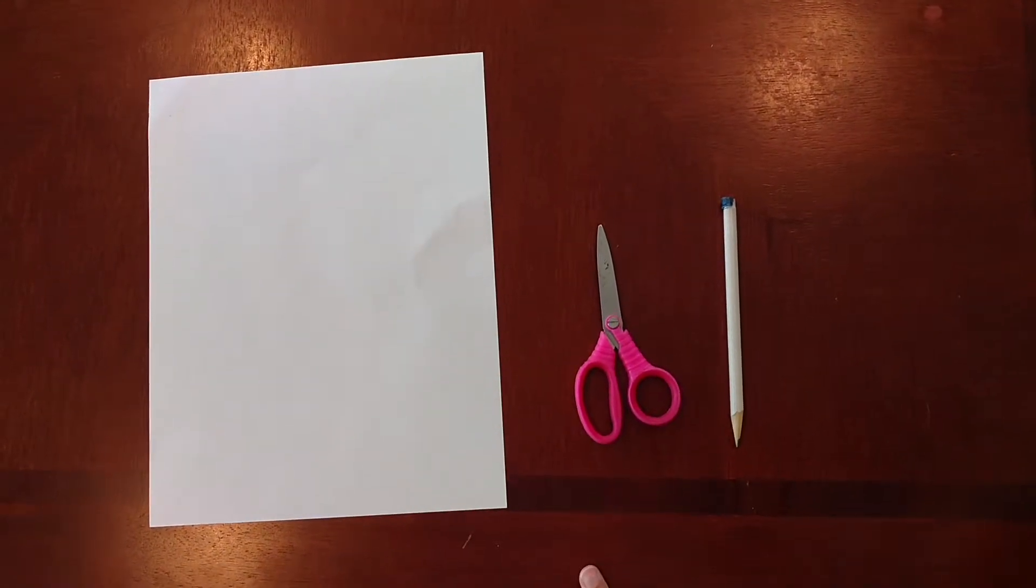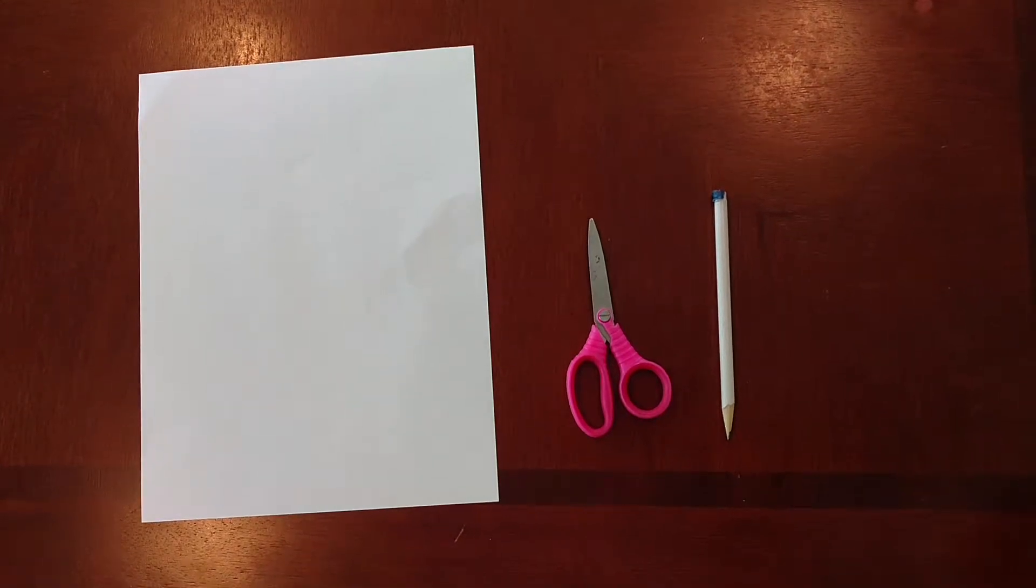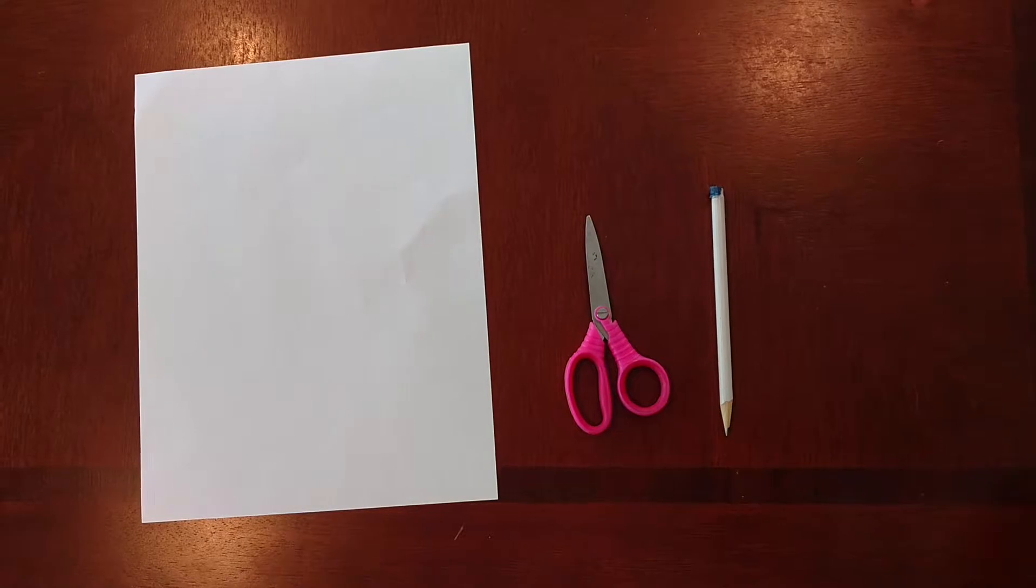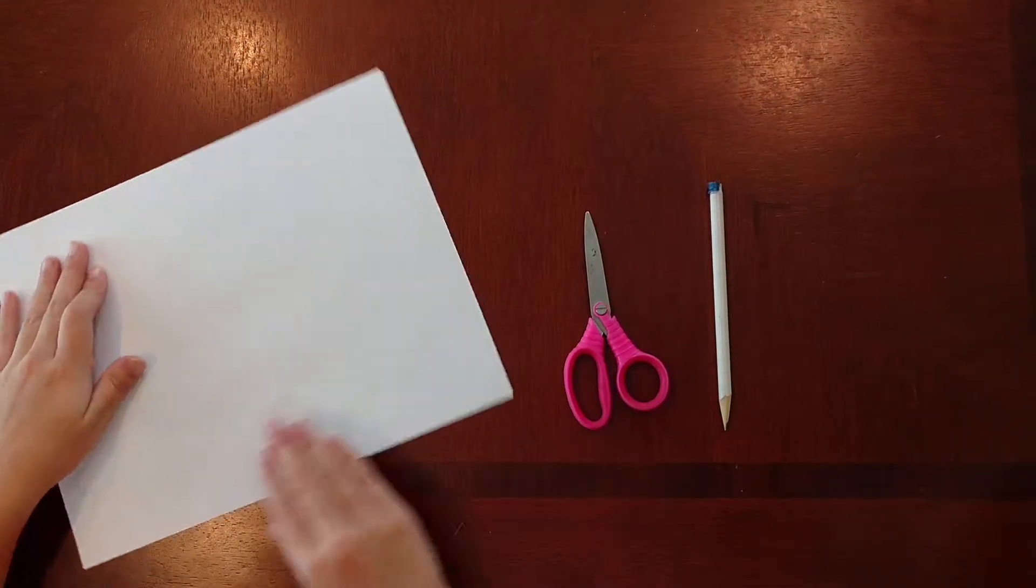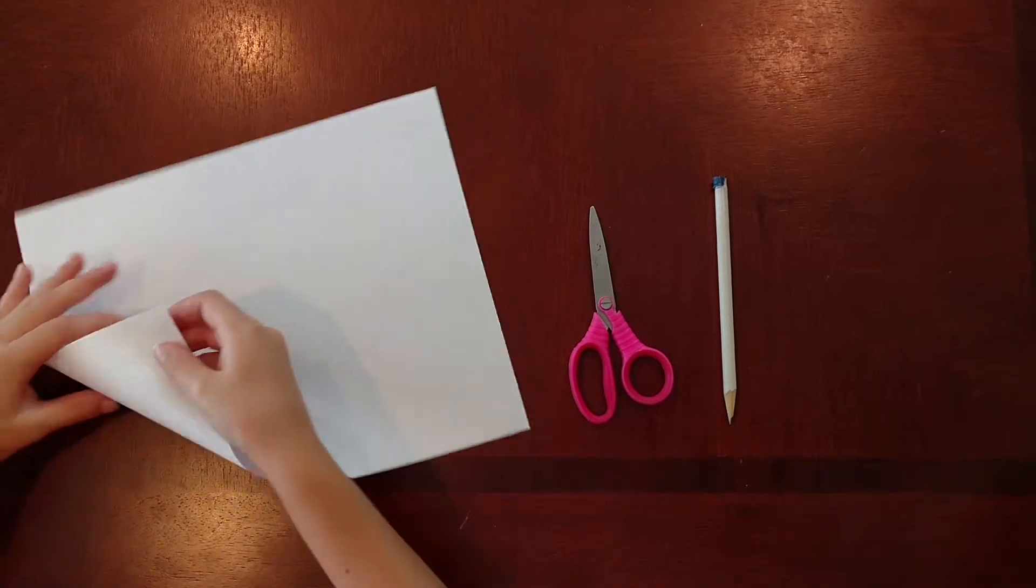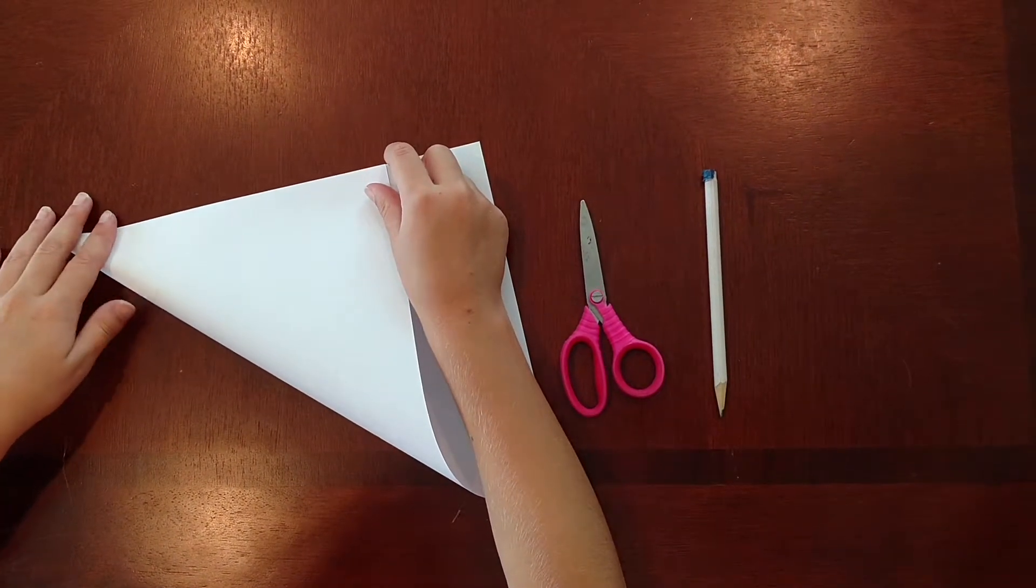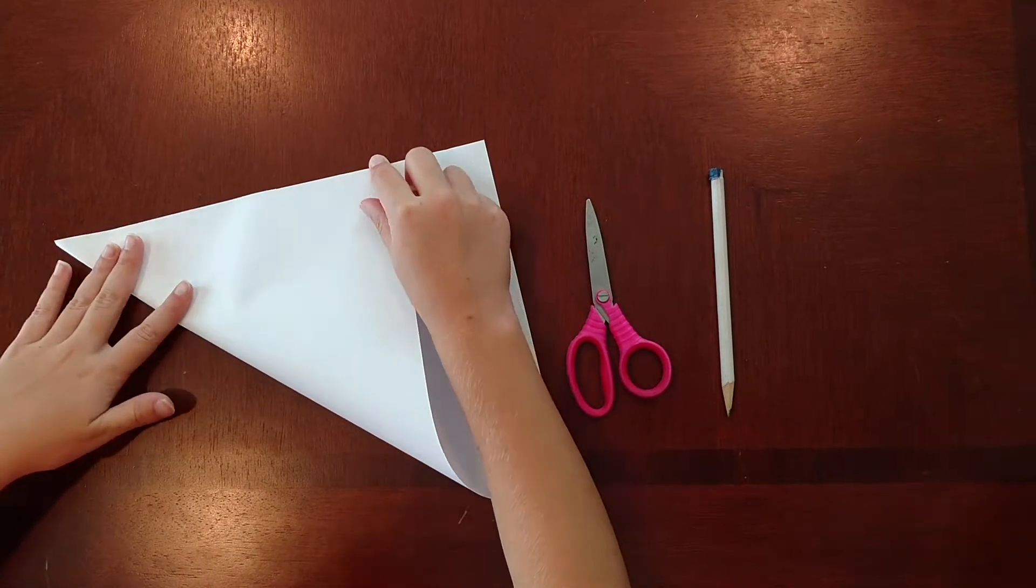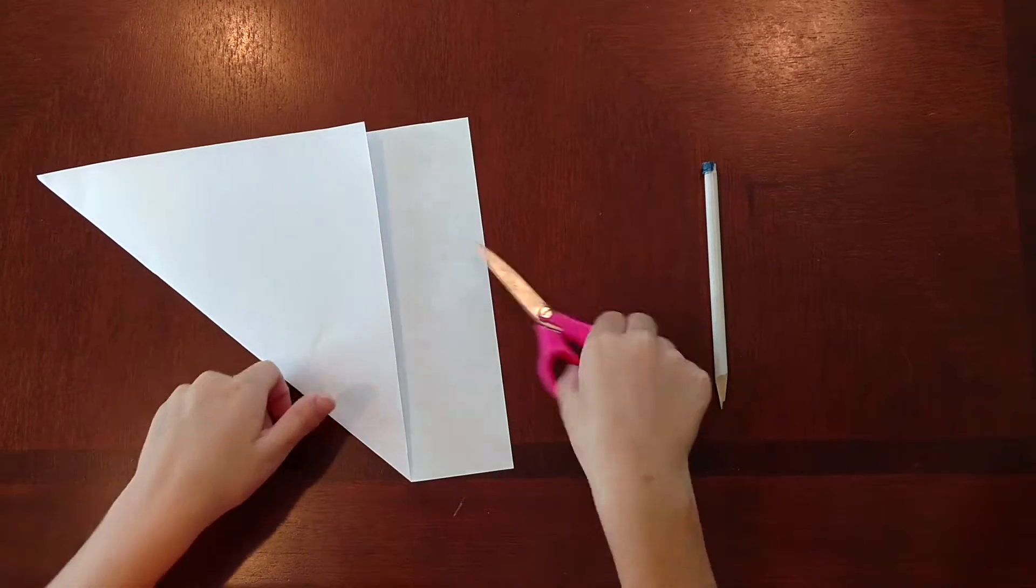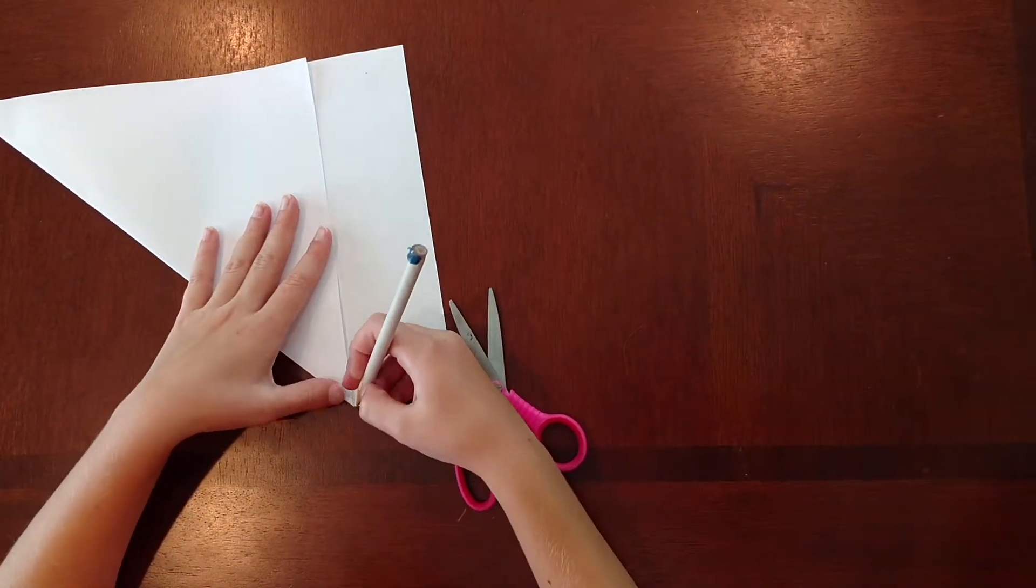Our first step is to fold and cut. If you have a square paper, you don't have to fold. But I have a rectangle piece of paper. So first of all, we're going to turn the paper long ways. And then you're going to take it over about where there can be a tiny rectangle.